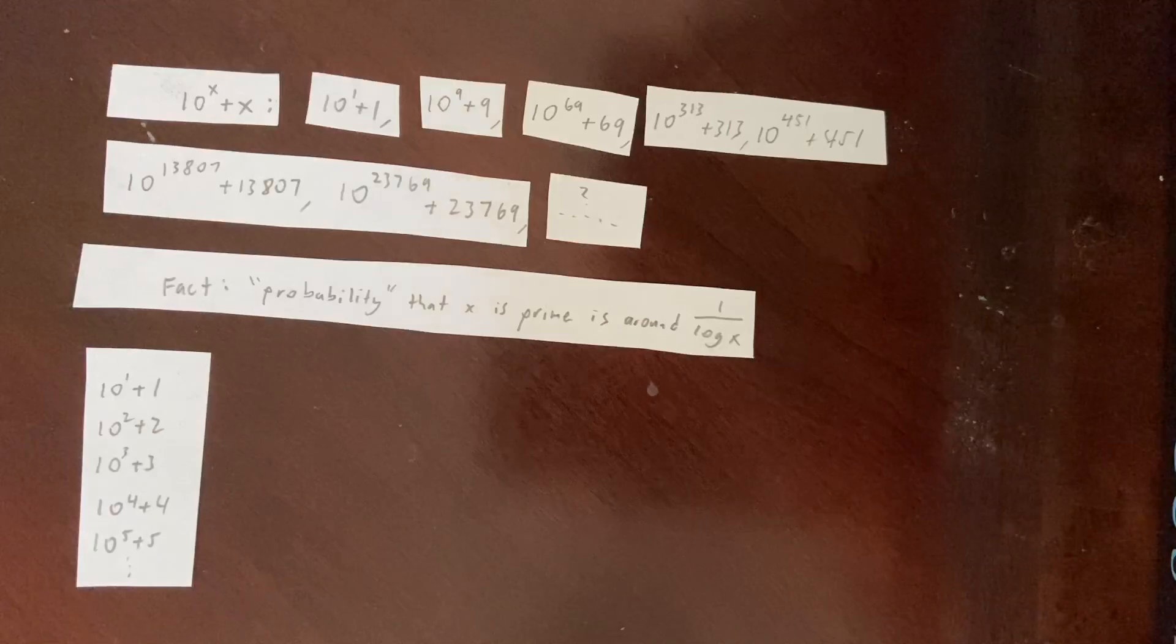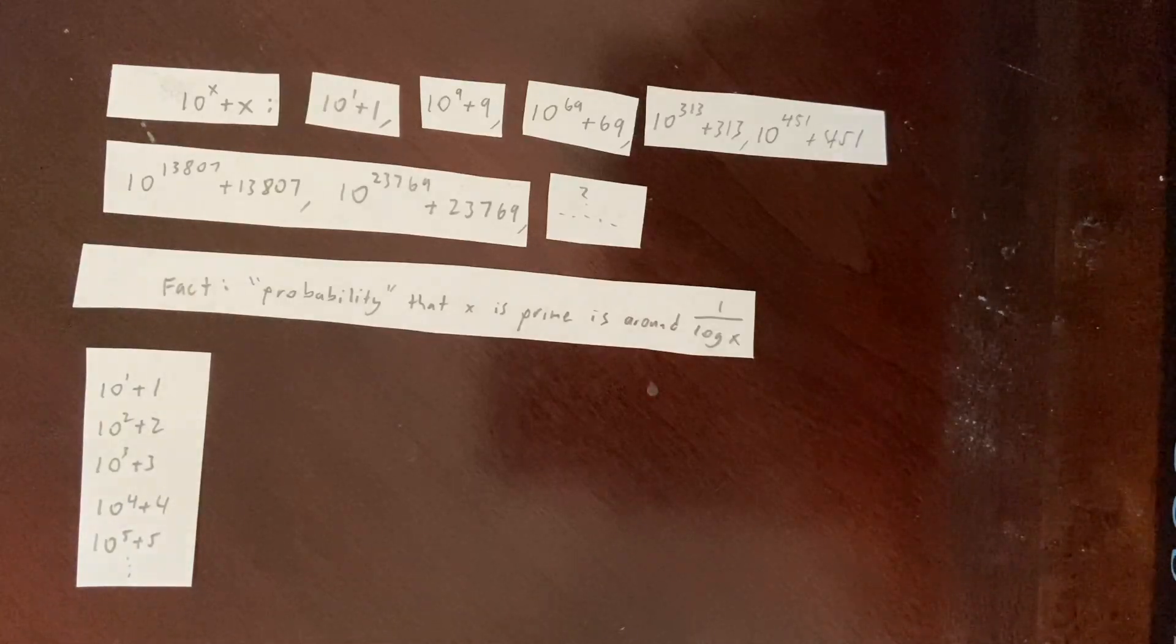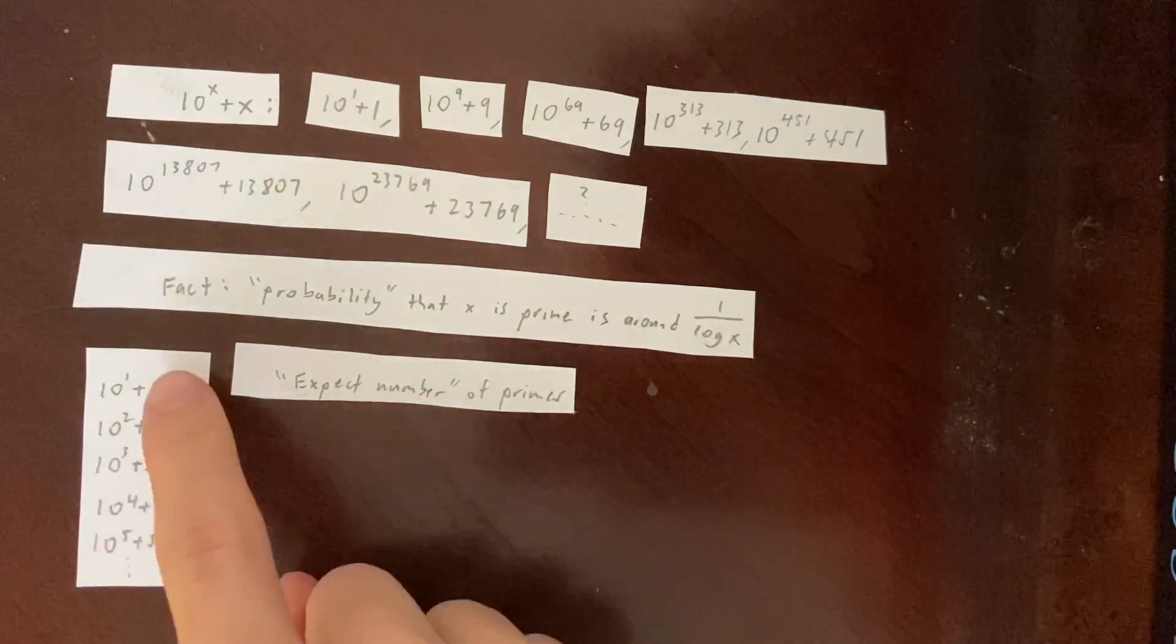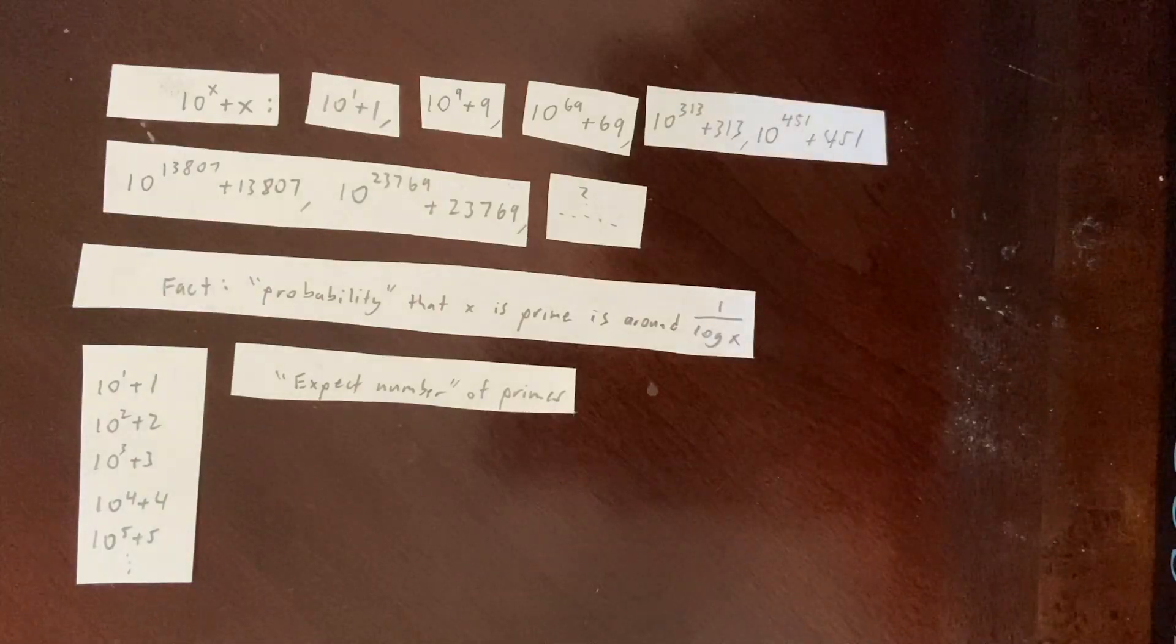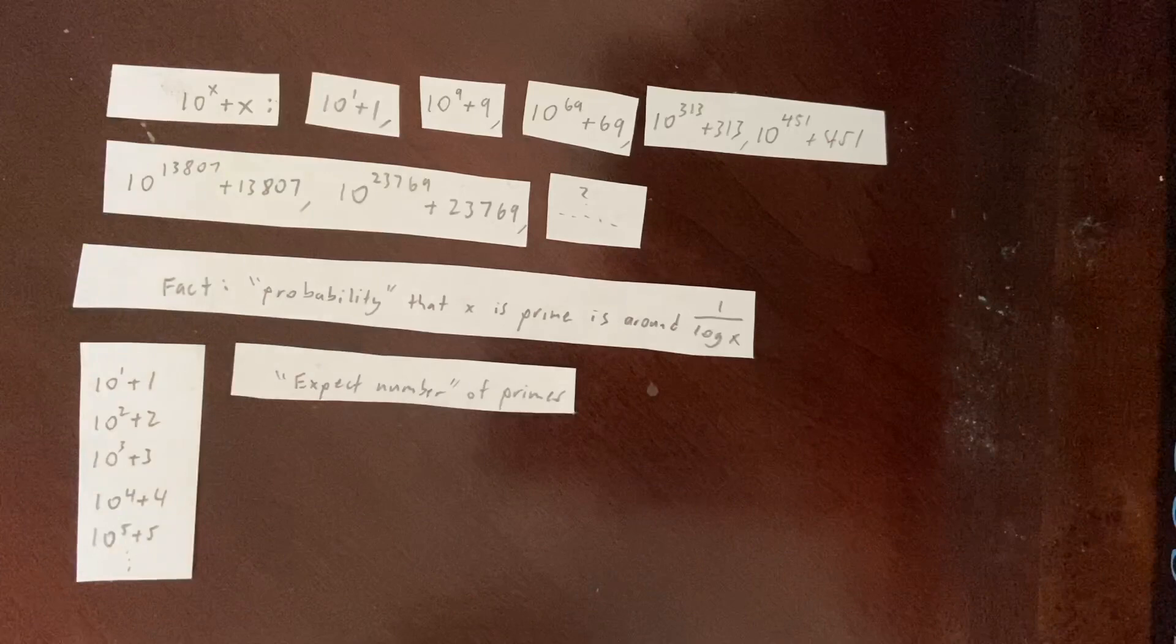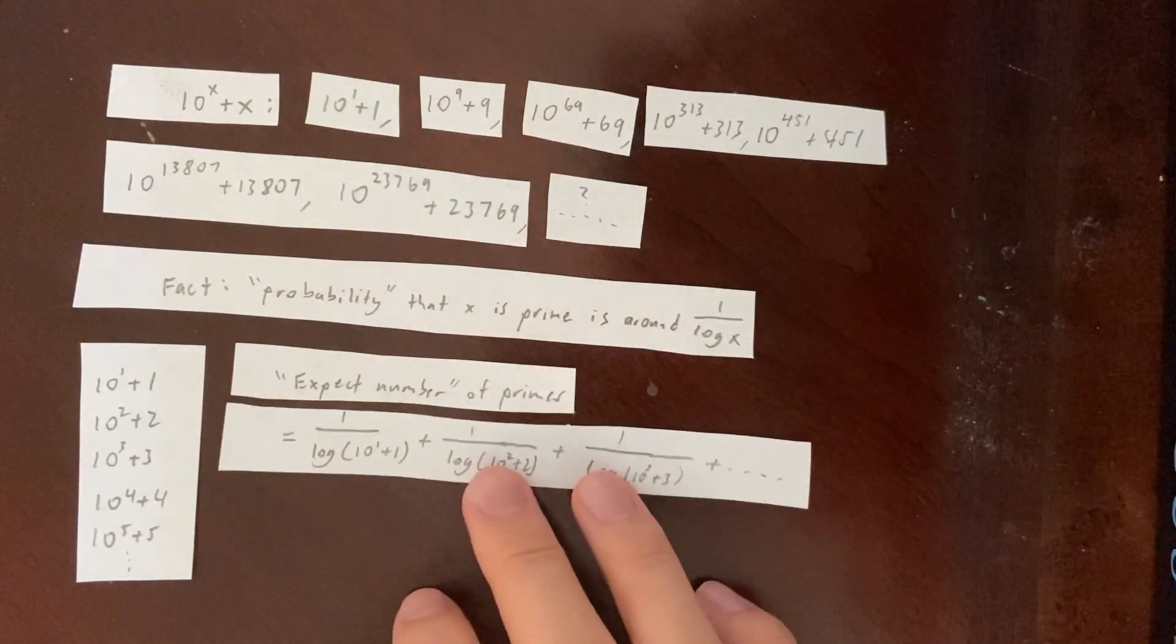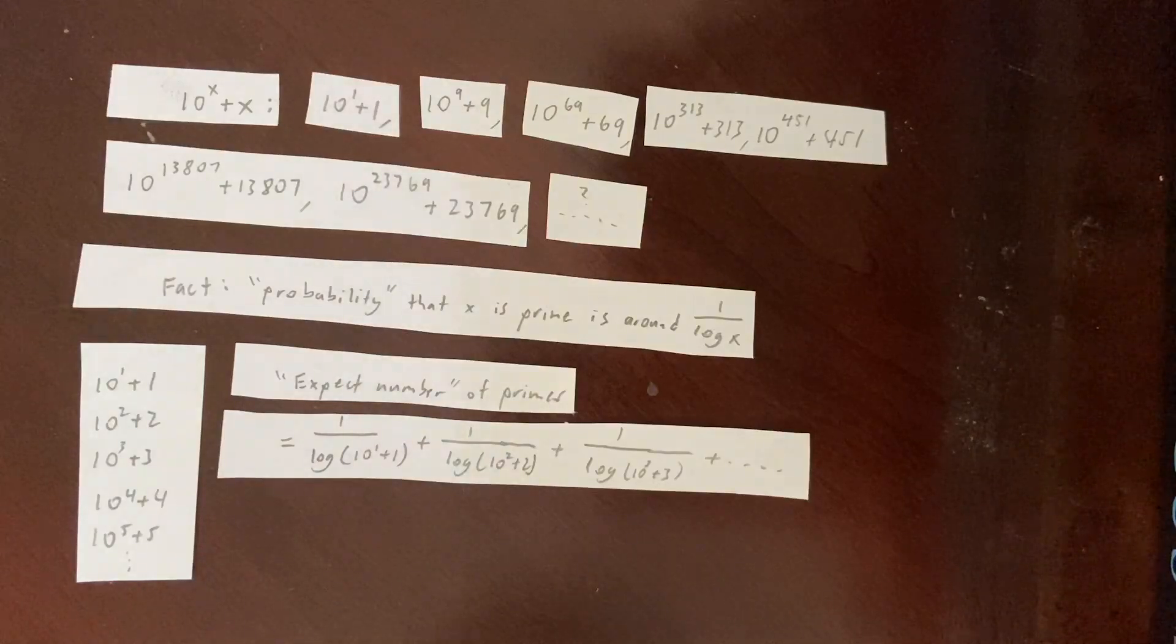Now, how many of these numbers are prime? Well, we don't know that, but we can find the quote-unquote expected number of primes in this sequence by adding up the probabilities that each one of these numbers are prime. So we would take 1 over the log of the first number plus 1 over the log of the second number, and so on, and you would get this expression. And we want to show that this sequence eventually goes to infinity.